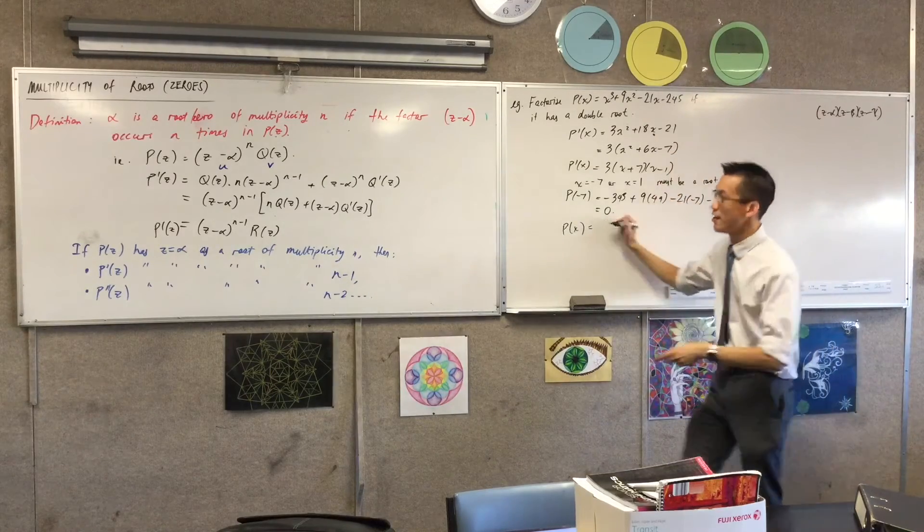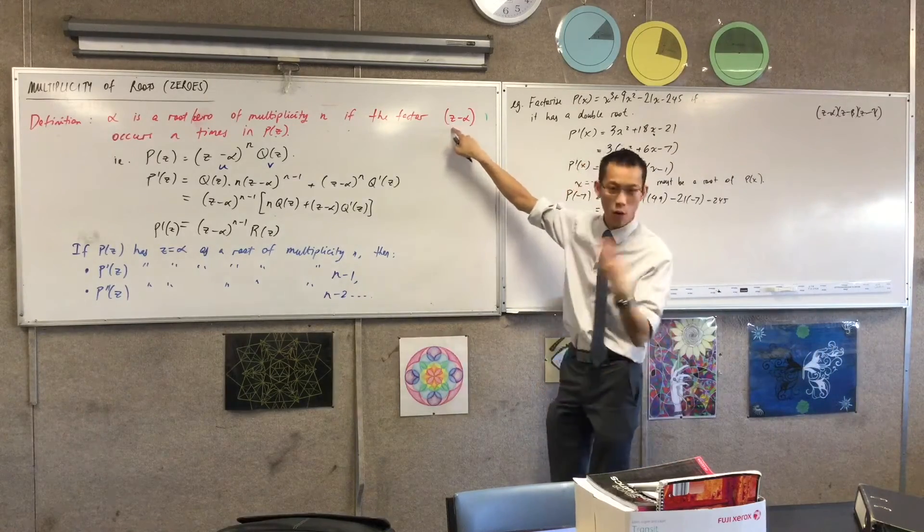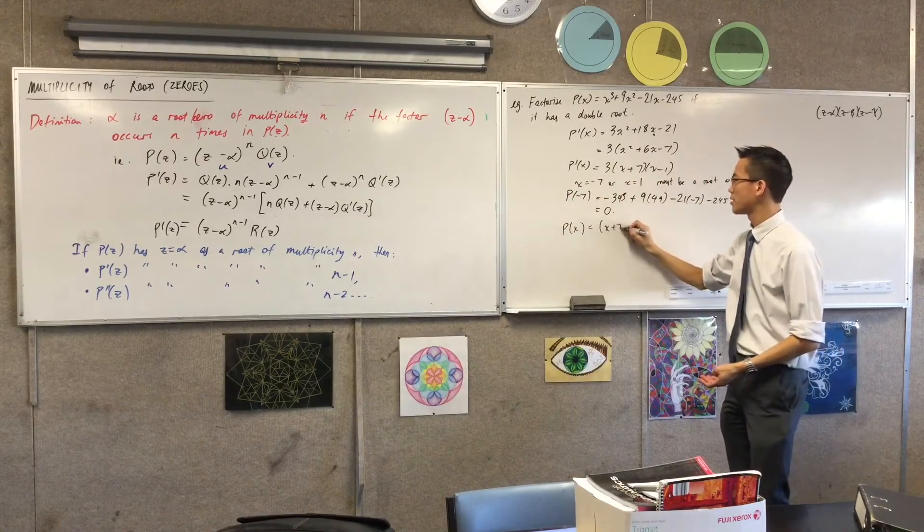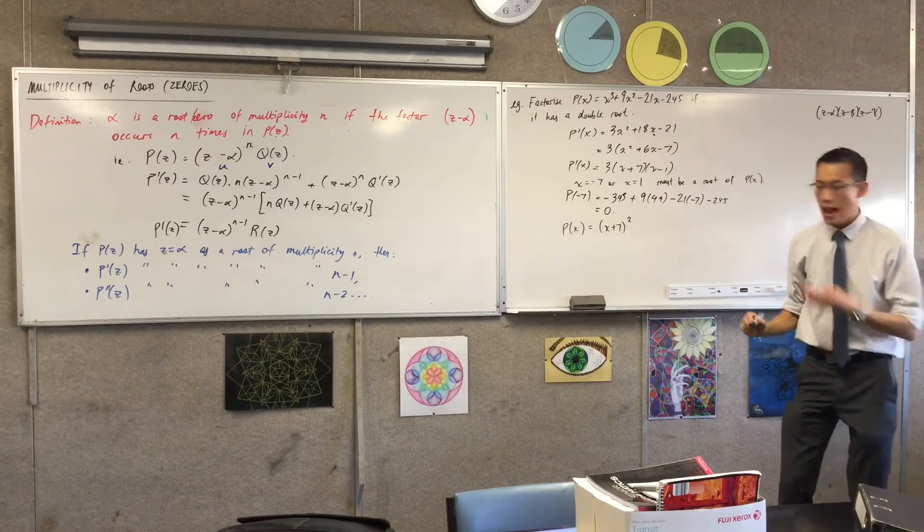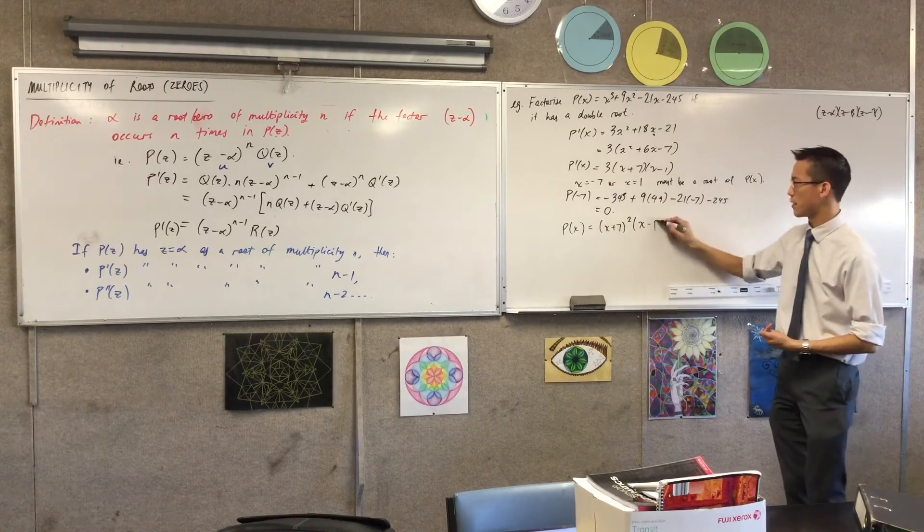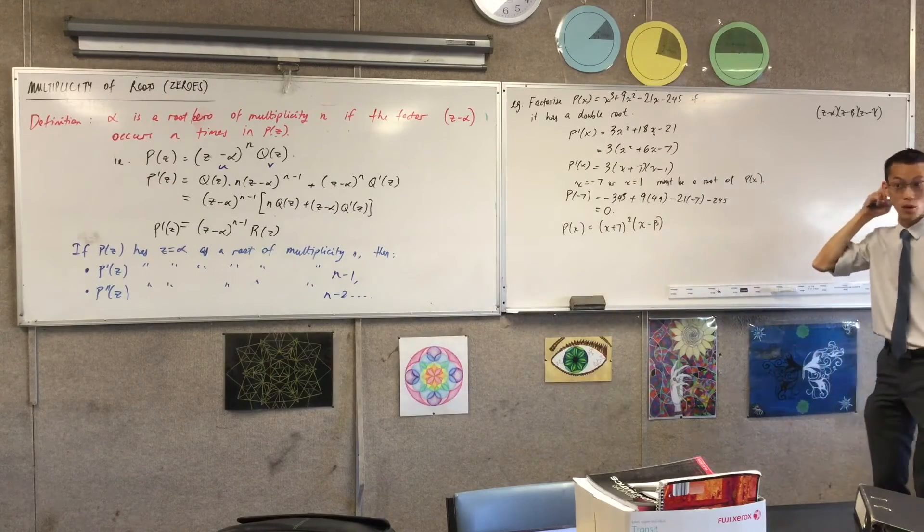x plus 7 squared. Very good. So the factor, x minus alpha, which is plus 7. So that's x plus 7. It occurs twice. And then I'm going to have some other thing hanging off on the end. I'm going to call it beta. It's the next root I'm trying to find.